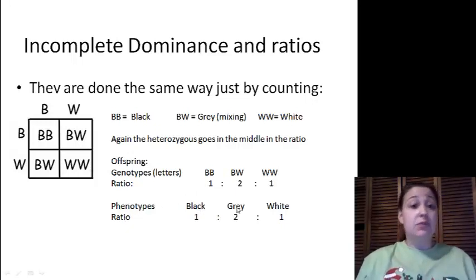Again, the phenotype. We're going to have black, gray, or white. And right underneath I'll put the ratio. We have one black, BB. We have two that are going to be grays, and those are going to be our BWs. And then we have one white, which is WW. Again, it's just counting.